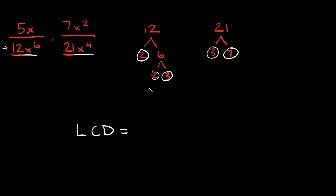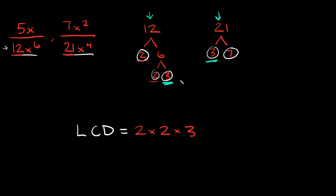Now to find the lowest common denominator, all I need to do is multiply all the prime factors together. But if I have any duplicates between the two, I'm only going to write it once. Starting with 12, we have a 2, a 2, and a 3, so we write 2 times 2 times 3. We have a 3 on the 12 side and a 3 on the 21 side, so we only write it once. The only other prime factor is the 7, so we include that also.